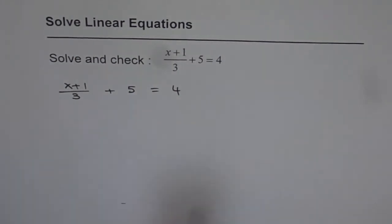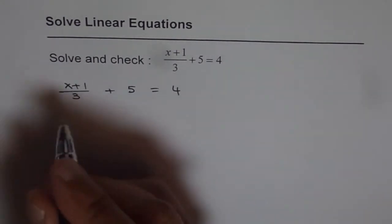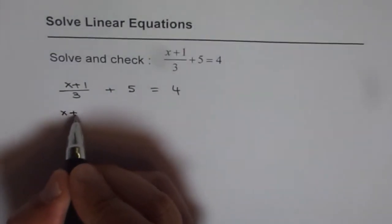We have 3 in the denominator, so it's a good idea to multiply all the terms by 3. Once we do that, we'll get rid of fractions. I'll show you how.